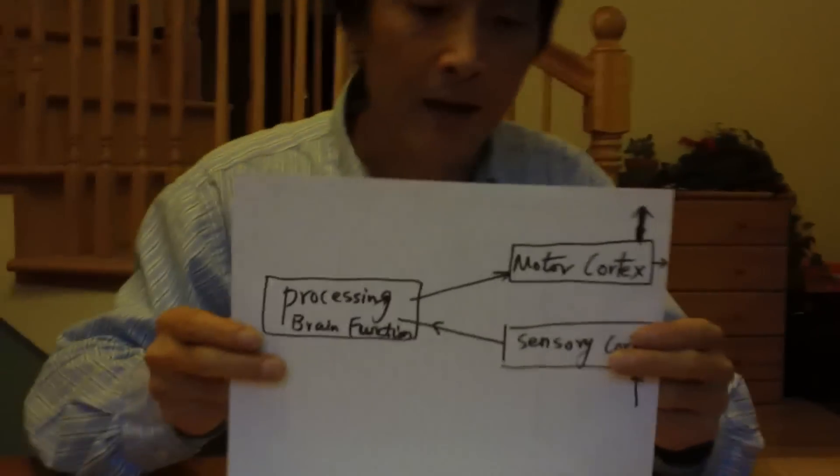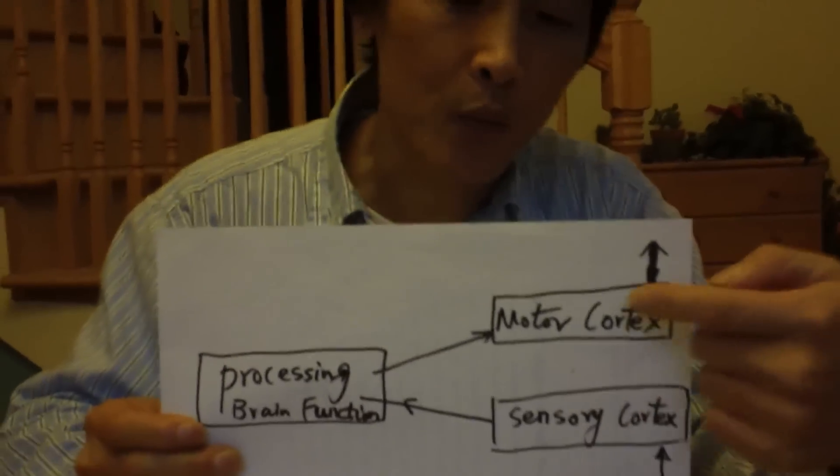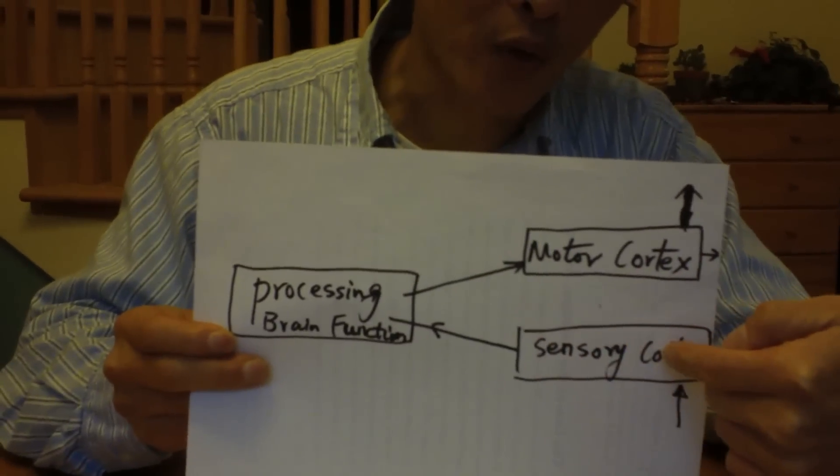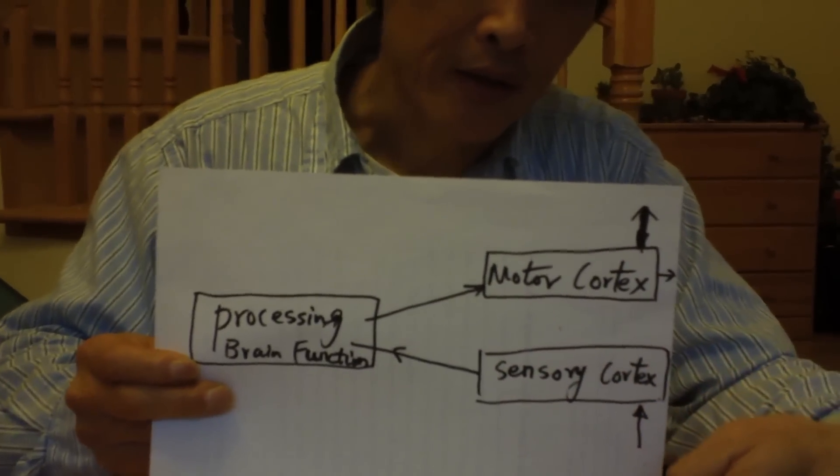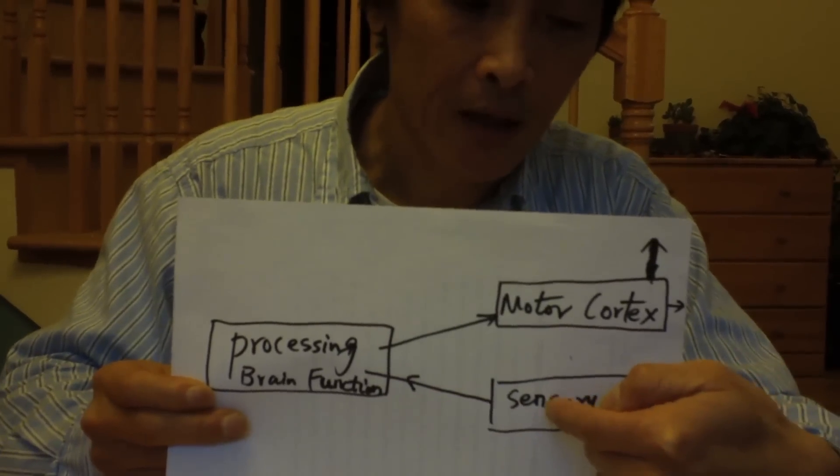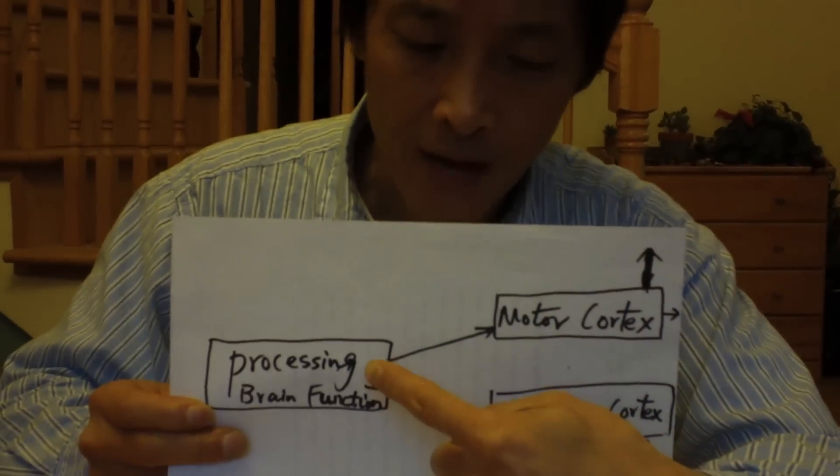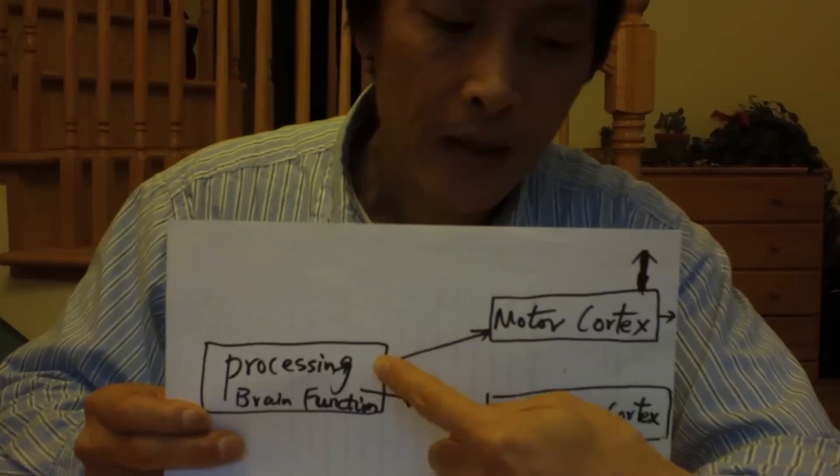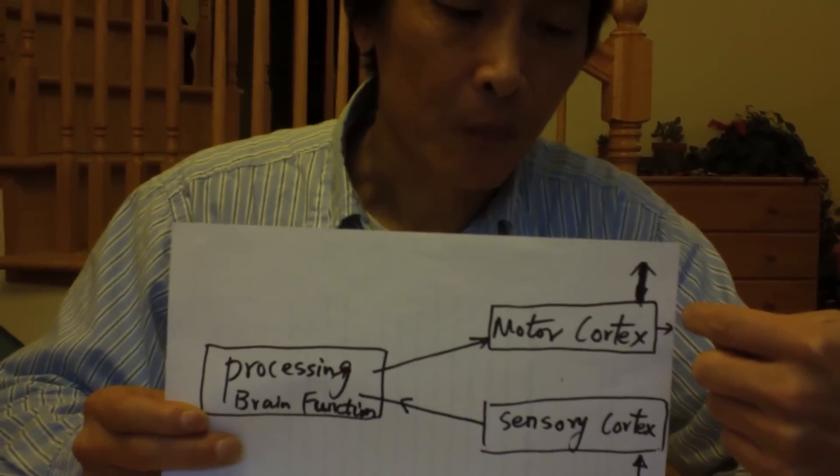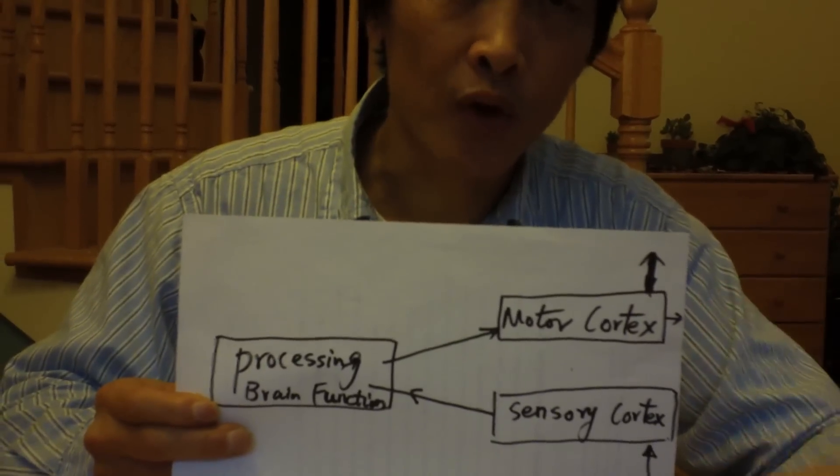Now let's look at this familiar chart. Last time we discussed the motor cortex and sensory cortex. The input comes from various sensors into the sensory cortex, goes to processing, generates the output, and goes out the motor cortex to control your movement.